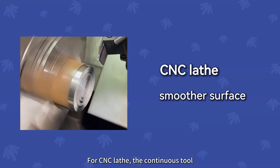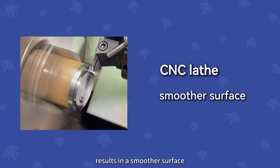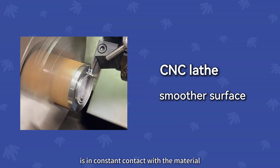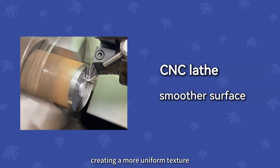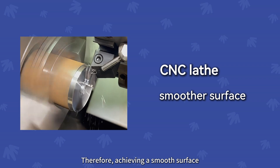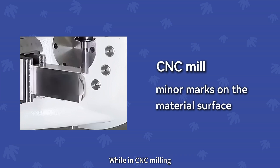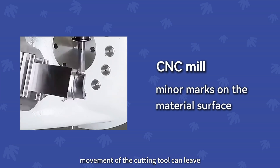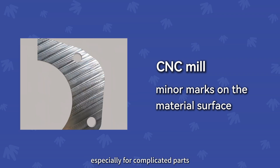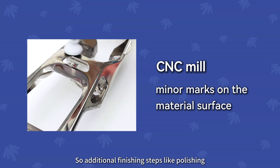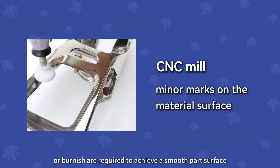Surface finishing. For CNC lathe, the constant tool cutting on the rotating part results in a smoother surface. This is because the tool is in constant contact with the material, creating a more uniform texture. Therefore, achieving a smooth surface doesn't require any additional process. While in CNC milling, the multi-directional movement of the cutting tool can leave minor marks on the material's surface, especially for complicated parts. So additional finishing steps like polishing or burnishing are required to achieve a smooth part surface.